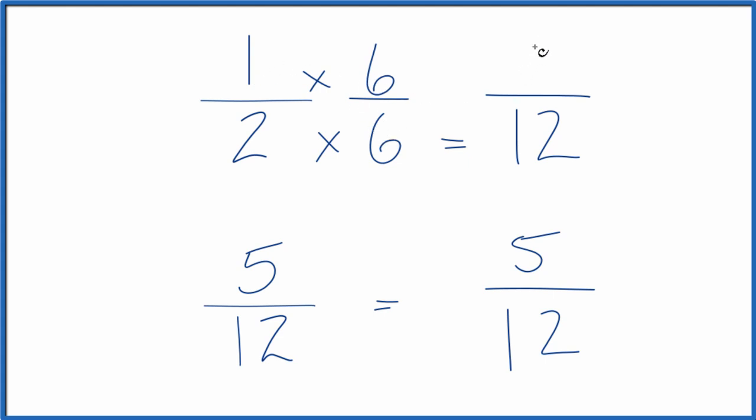So 1 times 6 is 6, and 6 divided by 12, 1 divided by 2, they both give you 0.5. They're equivalent fractions.